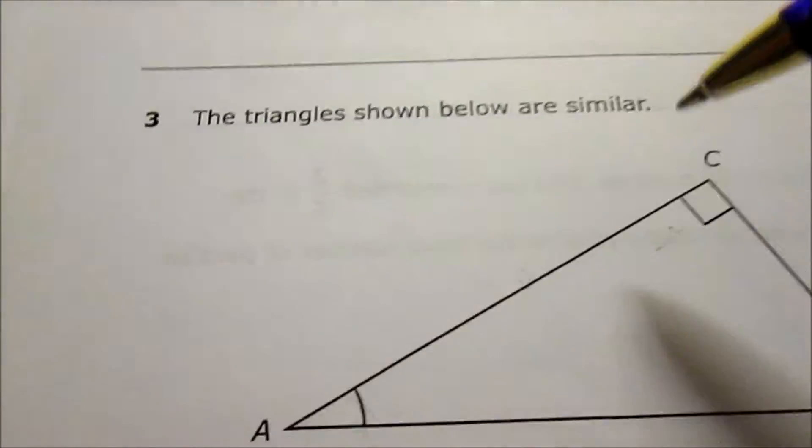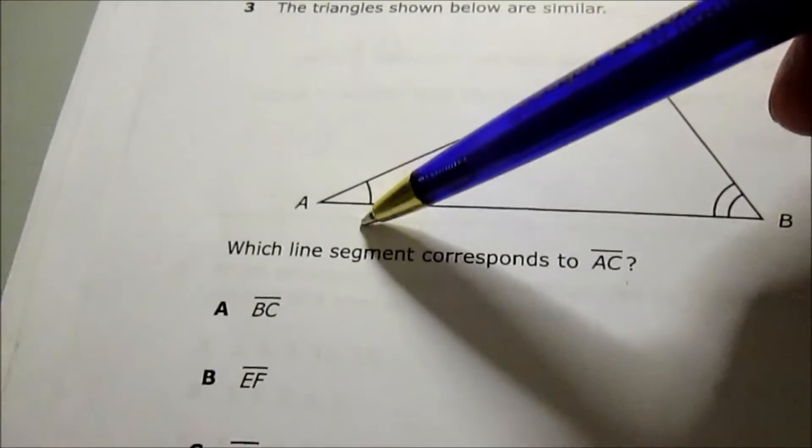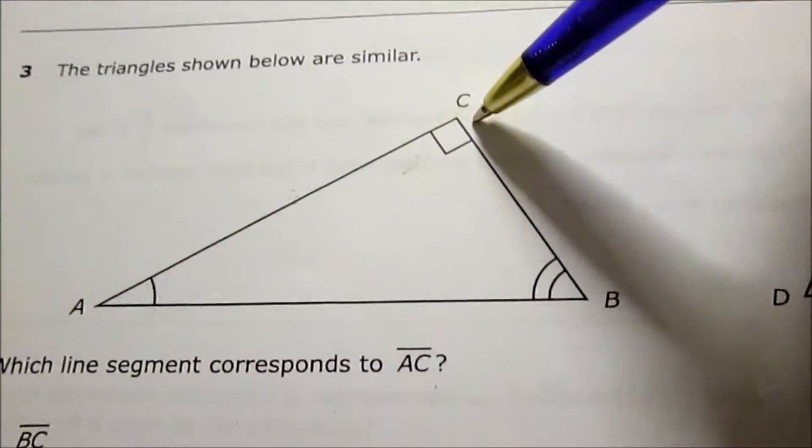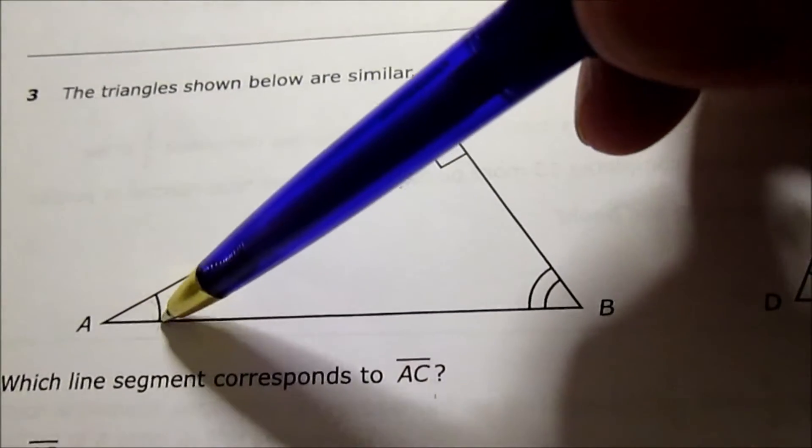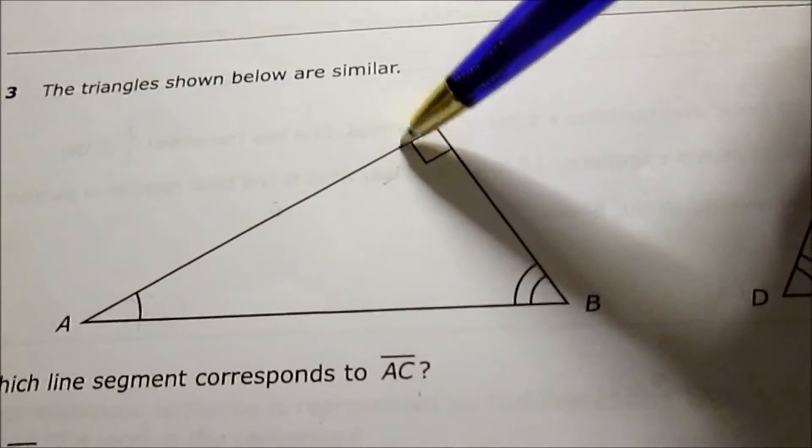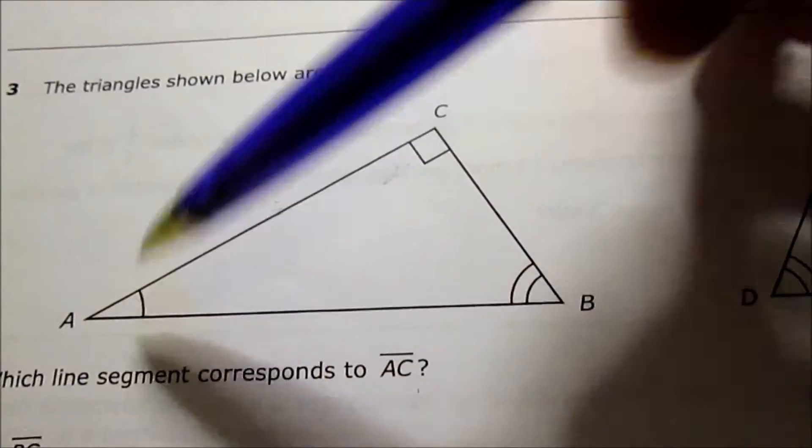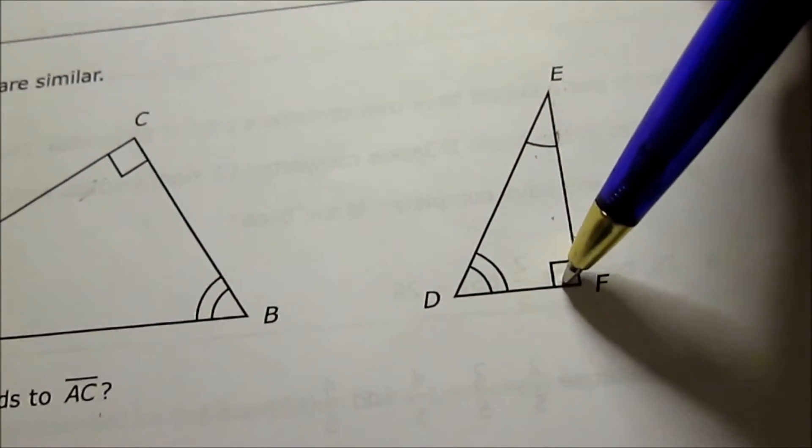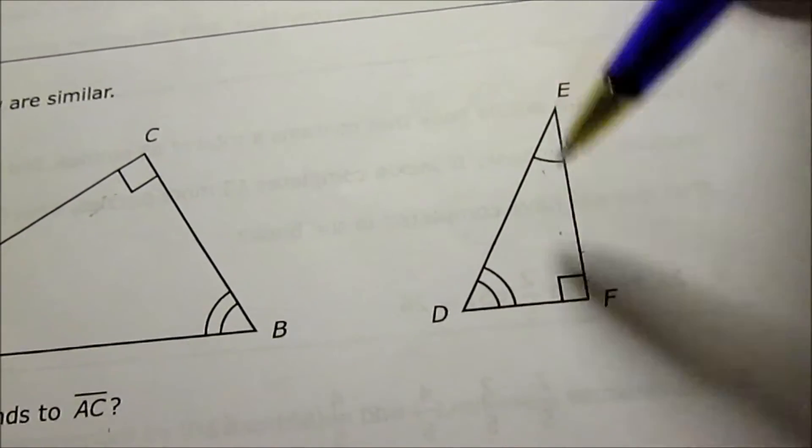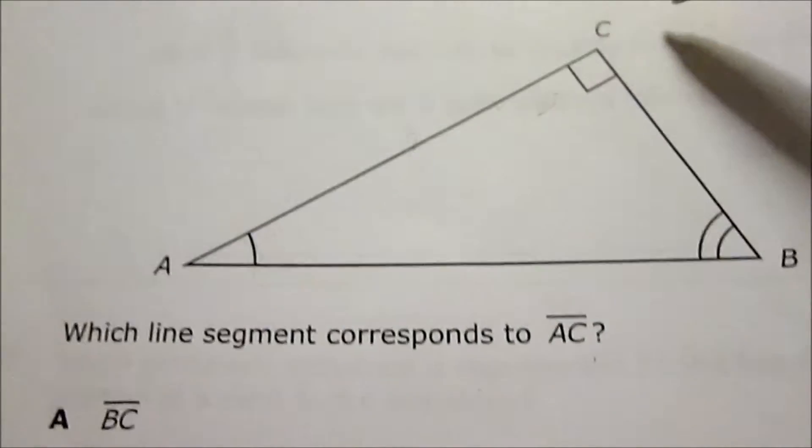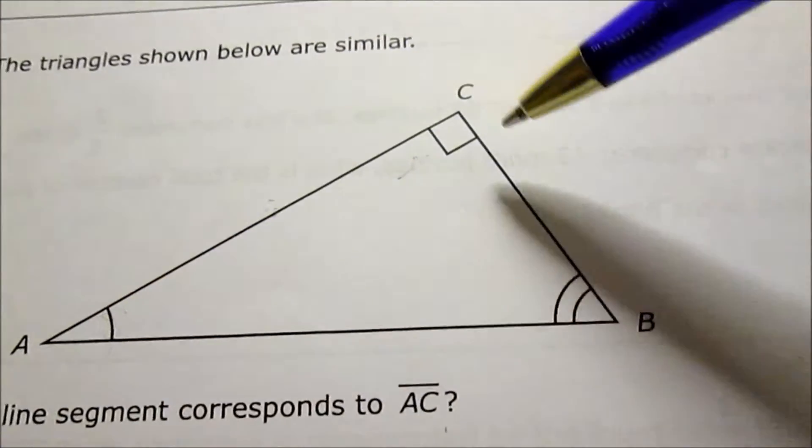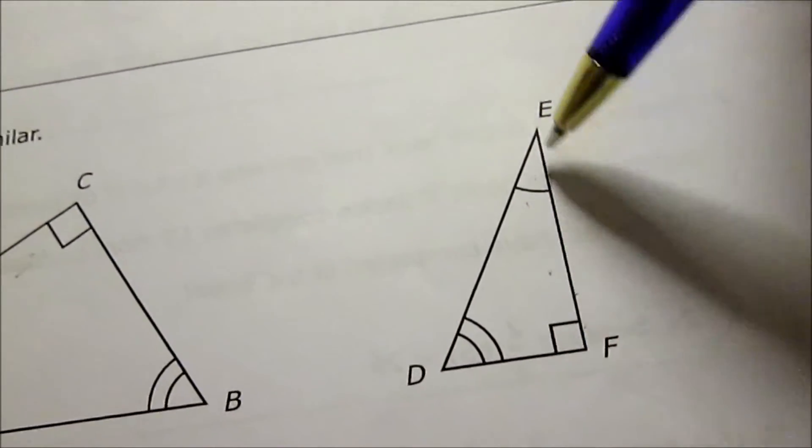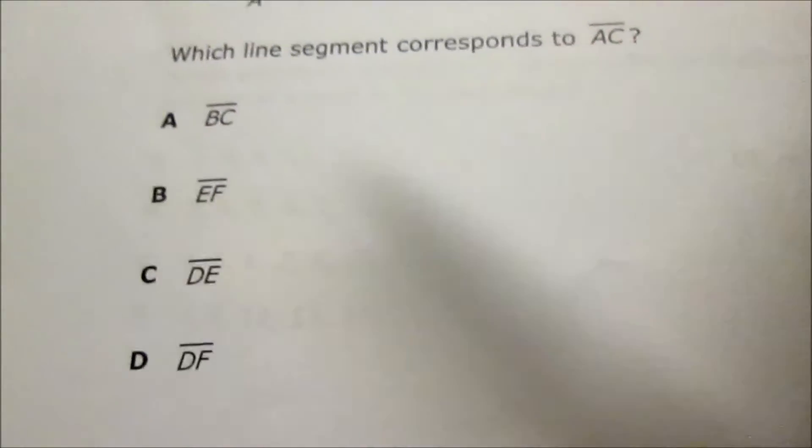Number 3: The triangles shown below are similar. Which line segment corresponds to AC? AC is over here. I use whatever landmarks are there. I look at this little, I'll just call it a rainbow, and over here, this right angle. AC has a rainbow and a right angle. I look over here, I try to find the one that matches that rainbow, right angle. Not two rainbows, just one. So EF goes with AC. Once again, look at the landmarks: rainbow, square, AC. Rainbow, square, EF. So I'm looking for EF, that's answer choice B.